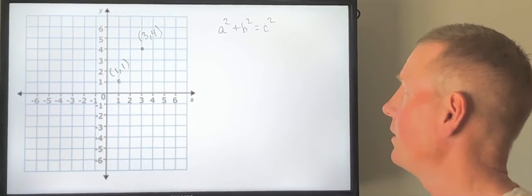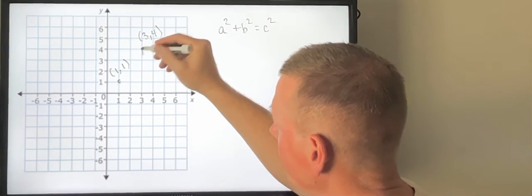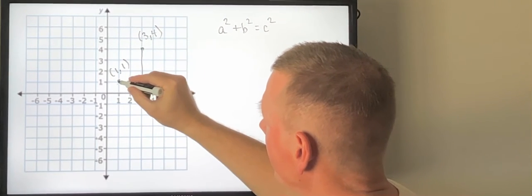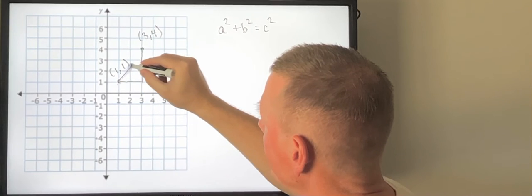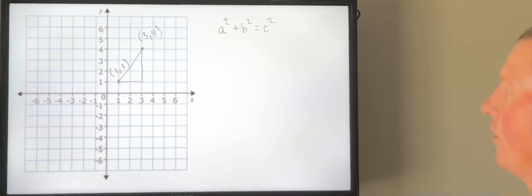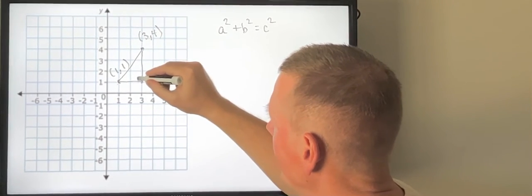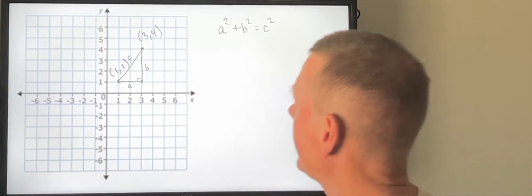So if I take my points that I've plotted here and I drop a vertical line and then I draw on a horizontal line to create a point of intersection and then I connect the two points (1,1) and (3,4), notice now I've created a right triangle. We call this side side a, the side b, and the side c.